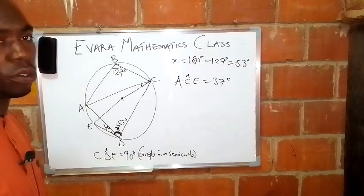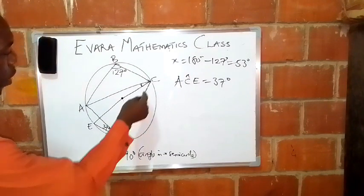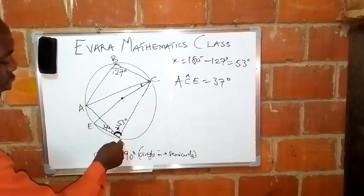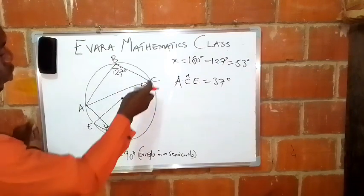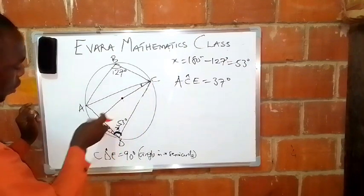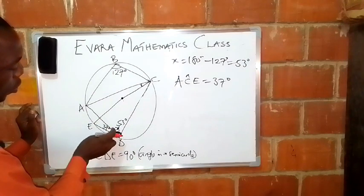How do you identify angles in the same segment? We have this chord called CD. It is from this chord that this angle here was formed.